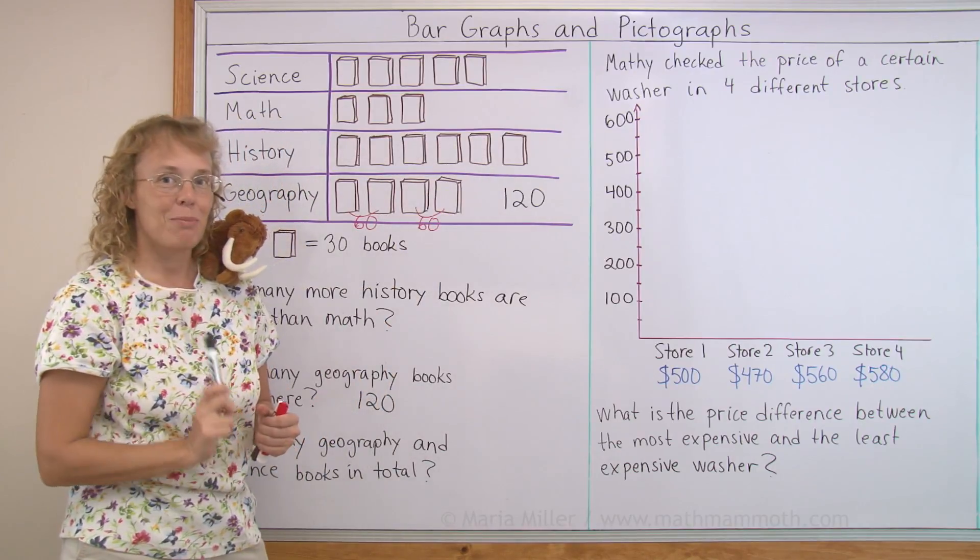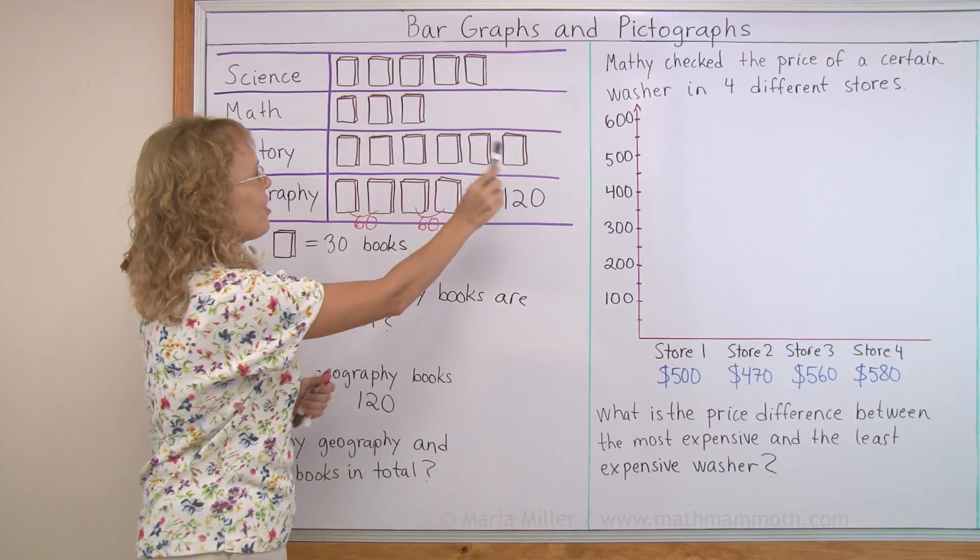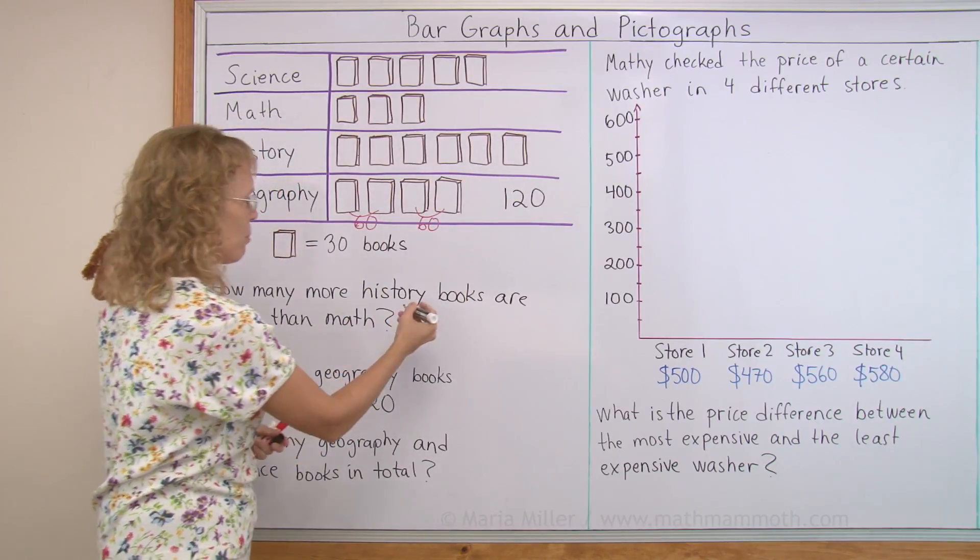Those three pictures mean how many books? These three pictures mean 30, 30, 30 or 90. 90 books.